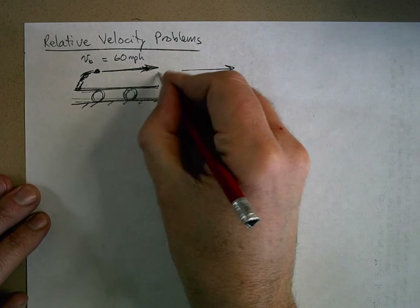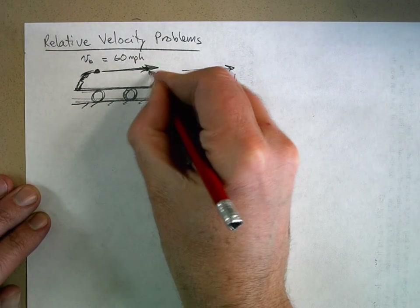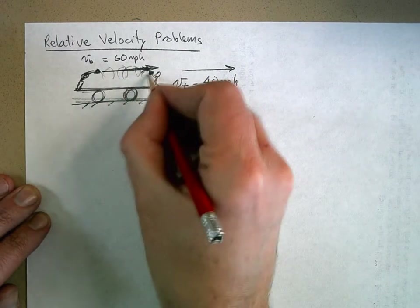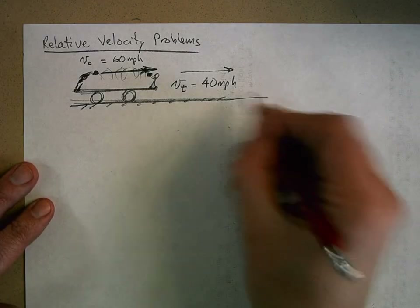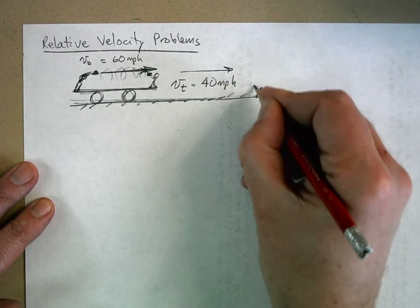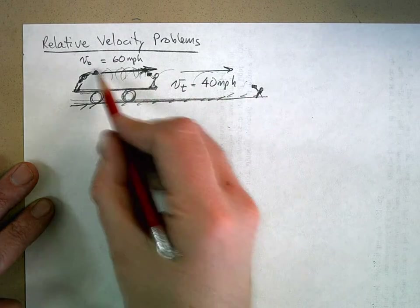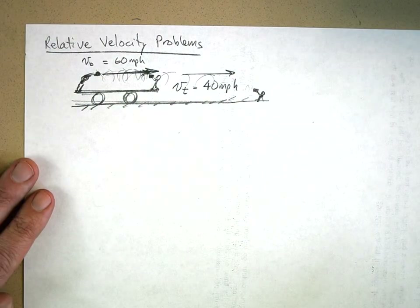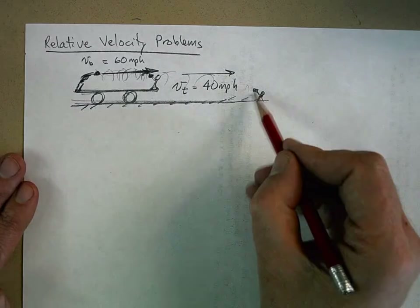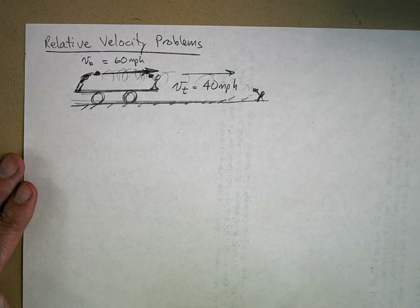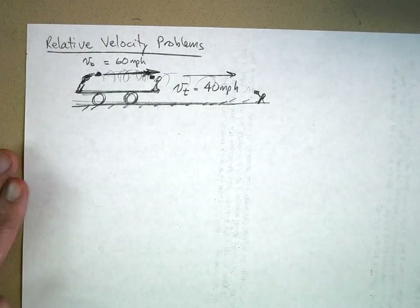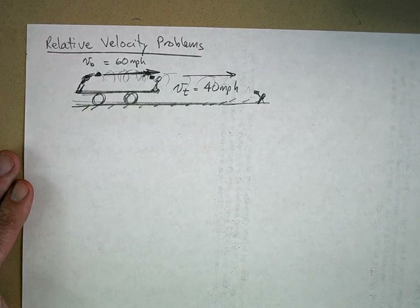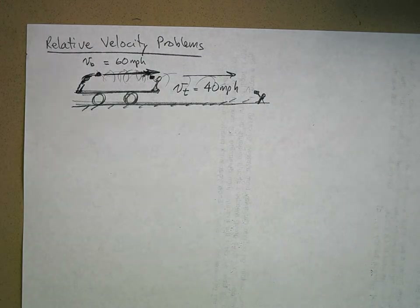Let's say somebody is standing here — maybe a Major League Baseball scout holding a radar gun, measuring the velocity by bouncing radio waves off the ball. What if there was a guy standing way over here on the tracks — not very smart — also holding a radar gun? He says that ball's not going 60 miles an hour. What do you think his gun is going to measure? 100 miles per hour, right? Because the ball not only has the velocity that Garrett added to it, but it also adds the velocity from the train it was riding on before he threw it. So how fast something is going depends on where you're measuring it from, and we call that relative velocity.